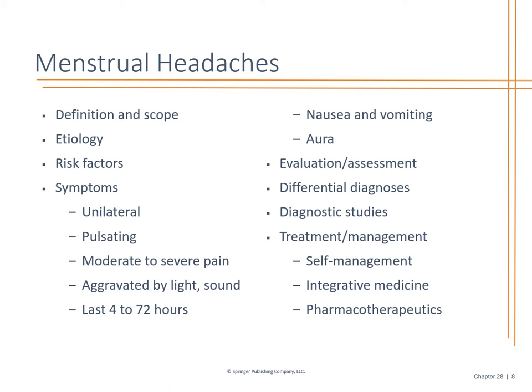Menstrual headaches can happen. They can be unilateral and pulsating, with photophobia, lasting anywhere from a few hours to a few days, and may include auras. It's important to rule out other causes — make sure there's no acute focal neurological deficit such as double vision, floaters, gait imbalances, unilateral weakness, or decreased grip strength. Those need to be assessed first before attributing the headache to menses. Look at differential diagnoses, labs — are their electrolytes off, are they anemic? — and consider NSAID use and alternative therapies.